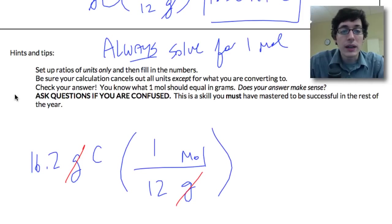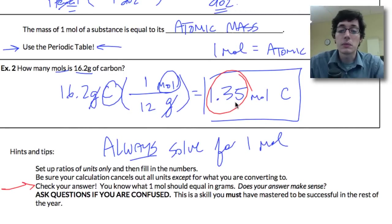Check your answer. If one mole is equal to 12 grams, this is greater than 12. 16.2 is higher than 12, so my answer should have been greater than 1, and it was. So it makes sense.